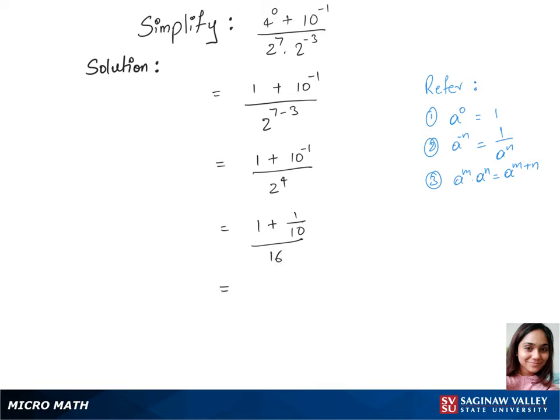And now let's add up the numerator here and get 10 plus 1 over 10, over 16. Now we have 11 over 10 over 16. That denominator 10 will come down in the numerator part, so that gives us 11 over 160, which is our final answer.